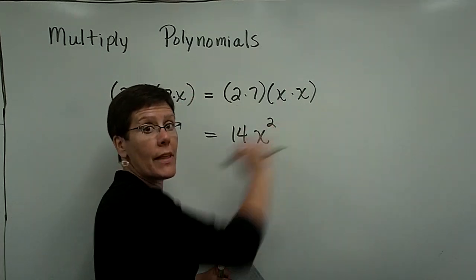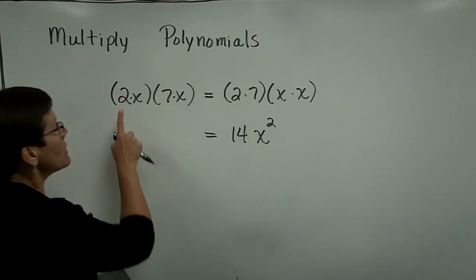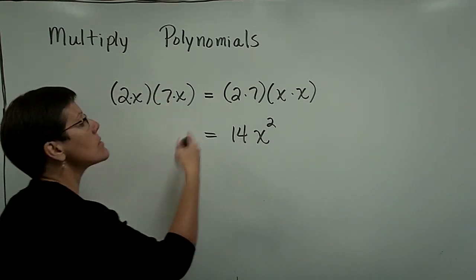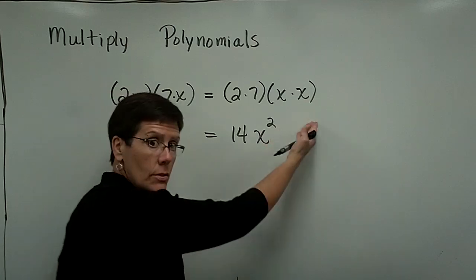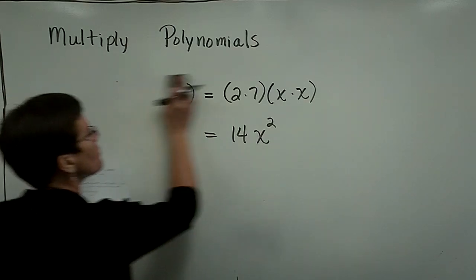I wouldn't expect you to have to write that down from now on. I would expect that you would say 2x times 7x is 14x squared, because you're adding those exponents.